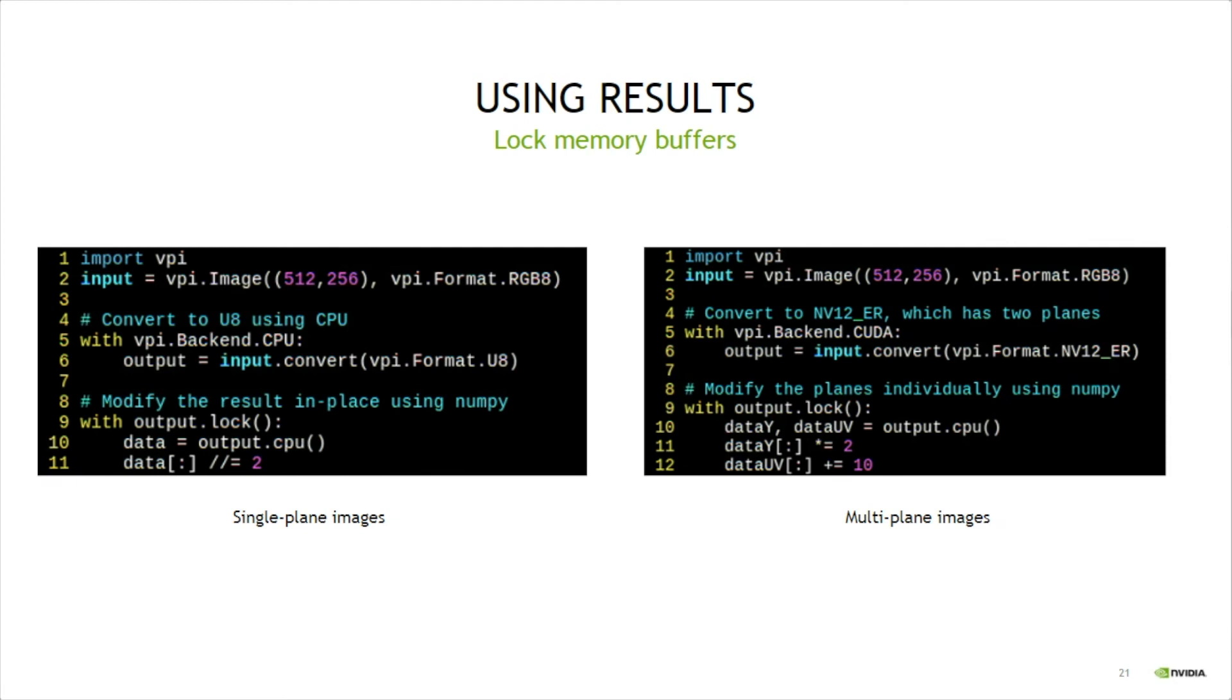For images with only one plane, the CPU method will simply return one NumPy array, as shown on lines 10 and 11 on the script to the left. When the image has more planes, a list of NumPy arrays is returned, one for each plane, as shown on lines 10 and 12 on the script to the right.